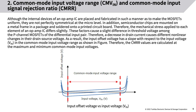Although internal devices of an op-amp IC are fabricated to make MOSFETs as uniform as possible, they are not perfectly symmetrical at the micro level. Semiconductor chips are mounted on a metal frame in a package and soldered onto a PCB, so mechanical stress differs slightly across elements. These factors cause a slight difference in threshold voltage among the P-channel MOSFETs of the differential input pair, causing different nonlinear changes in drain-source voltage. As a result, the input offset voltage has a slope with respect to VIN in the common mode input voltage range, and CMRR values are calculated at the maximum and minimum common mode input voltages.